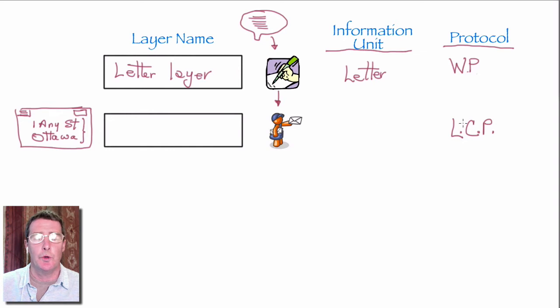Now on the other end, we're going to have a letter carrier as well. So if a letter carrier received a letter, the letter carrier would also deliver it within their local area. This is the task of the letter carrier protocol. The information in this layer, which we'll call the letter carrier layer, is the envelope.